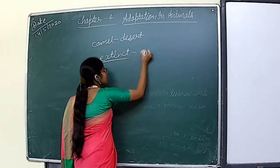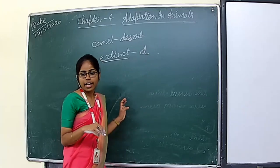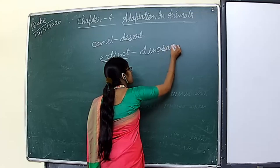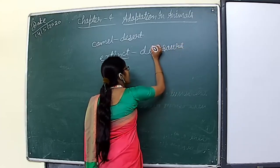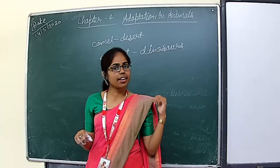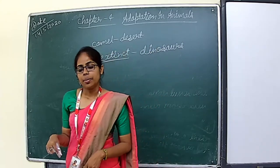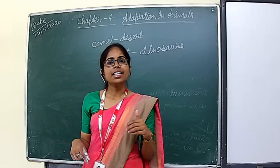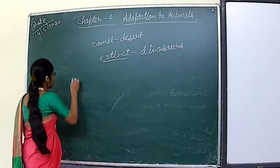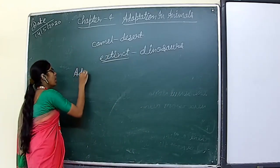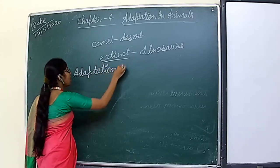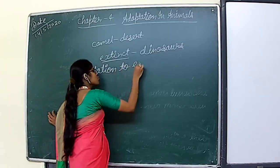One example of an extinct animal is the dinosaur, and there are many other examples we will study. In this chapter we will also study about endangered species and extinct species. But before that, let's study adaptation to environment and once again recall the definition of adaptation.